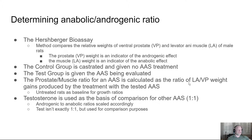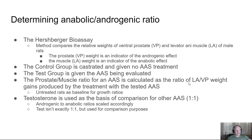The control group of male rats is castrated and given no anabolic steroid treatment. The test group is also castrated but is given the androgenic-anabolic steroid being evaluated, so you can compare the two. The prostate-to-muscle ratio for an AAS is calculated as the ratio of prostate growth versus muscle growth produced by the tested steroid.